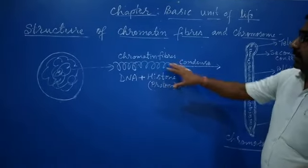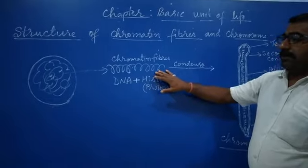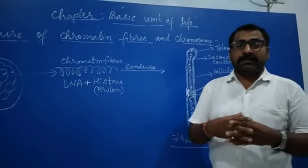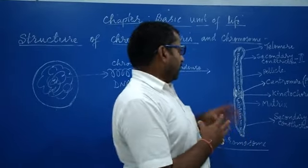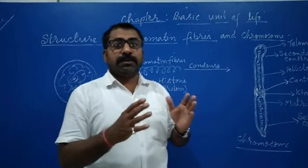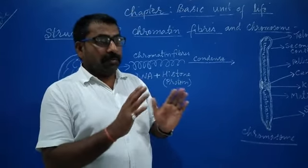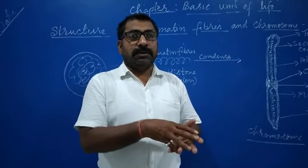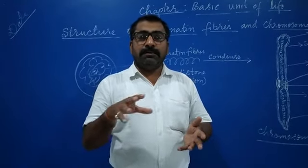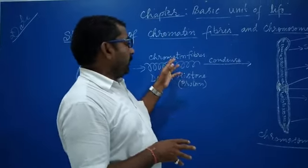When condensation of chromatin fibers takes place—condensation means thickening—then only we are able to observe the chromosomes. Chromosomes are not visible with any microscope inside the nucleus. They are always visible in form of chromatin fiber.